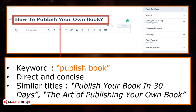Let us illustrate an example. Say you have a blog post in WordPress with a post that talks about how to publish your own book. The most important keyword lies in your title. You may write your title differently, but keep in mind that you'll need to be direct and concise — something like 'Publish Your Book in 30 Days' or 'The Art of Publishing Your Own Book.' Similar keywords are maintained in both titles: publish, book.